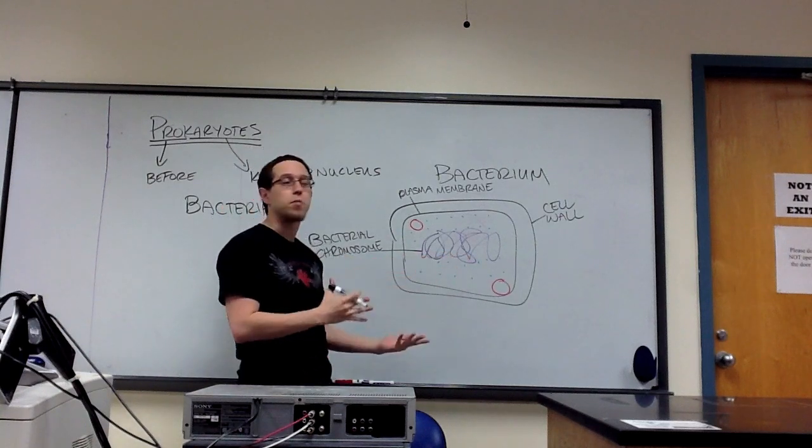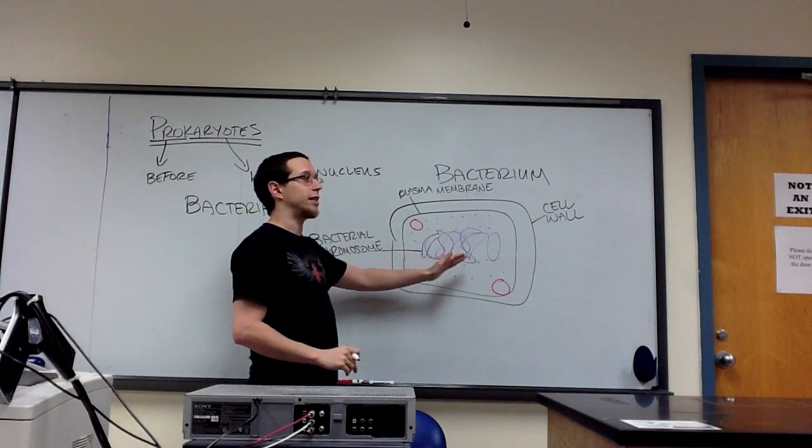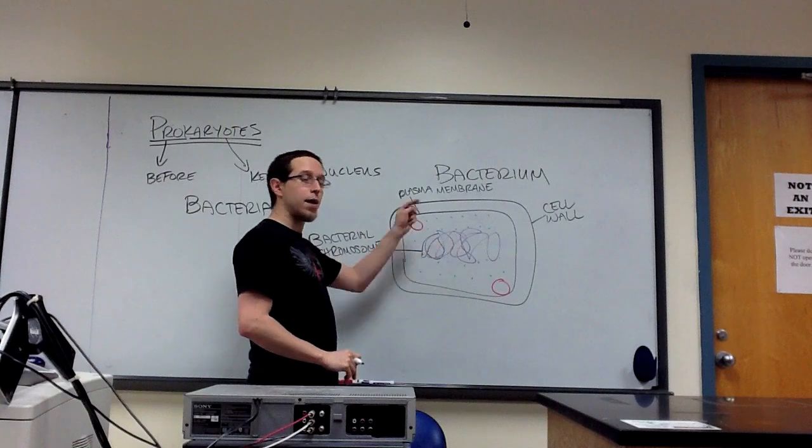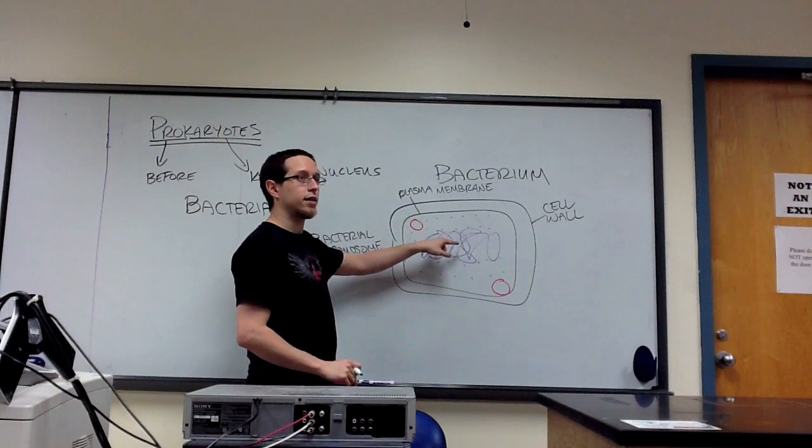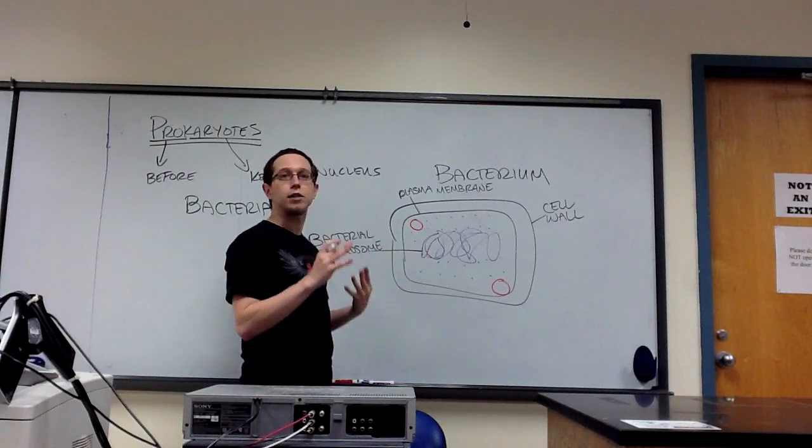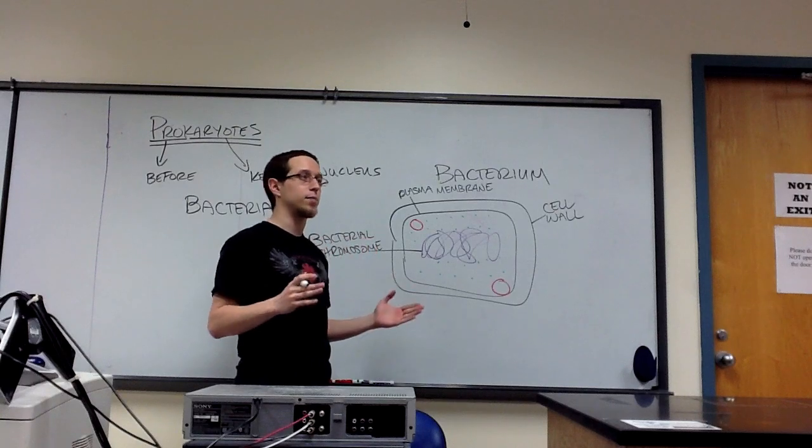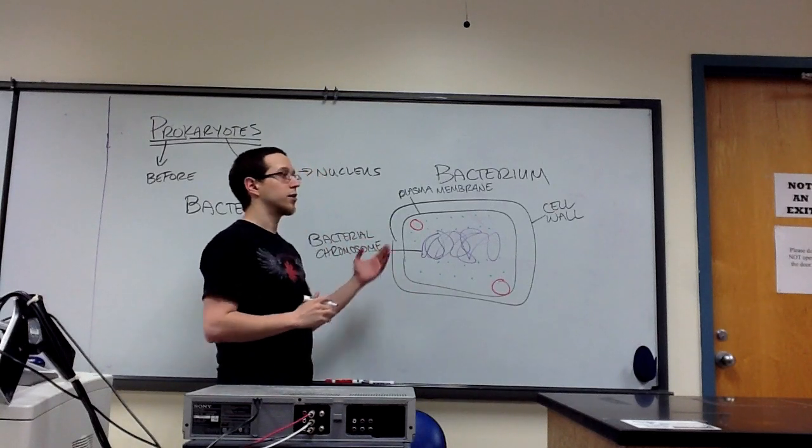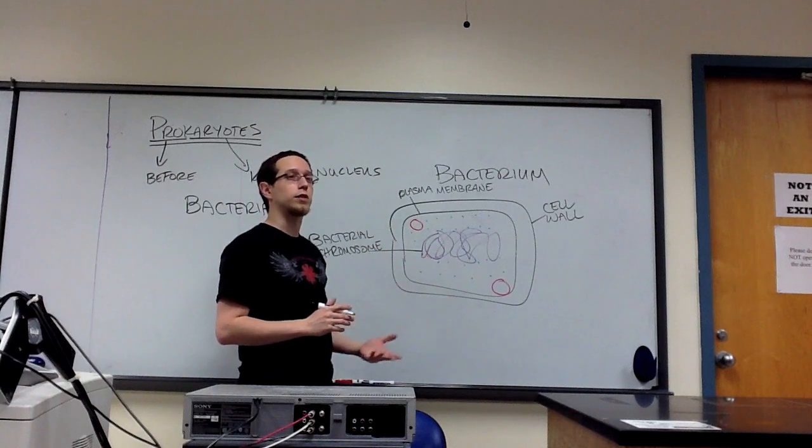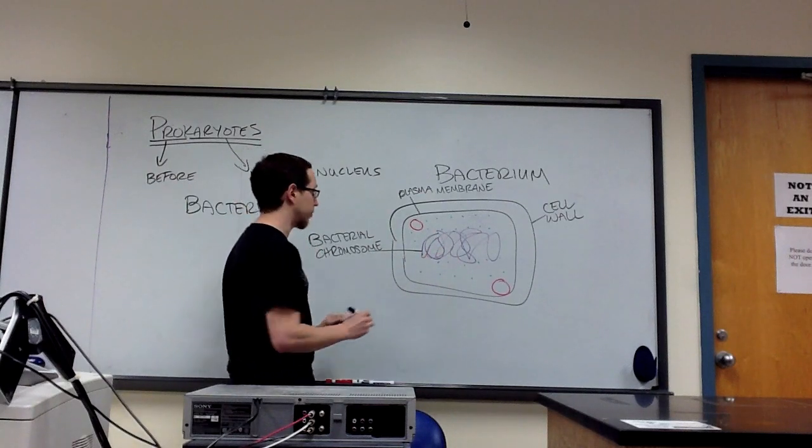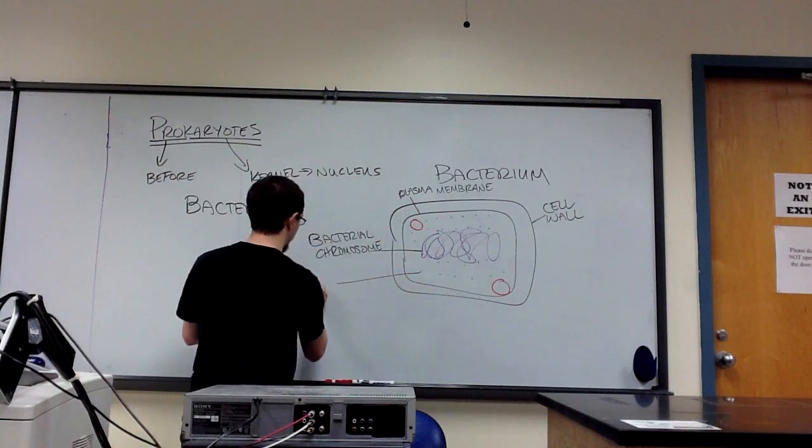Now, since we have a chromosome, which is composed of DNA, that means we're going to need to transcribe mRNA off of that DNA, and then translate that mRNA into an amino acid message that will compose a polypeptide. So to translate or perform translation requires one organelle, and that is the ribosome.